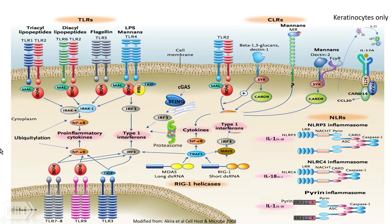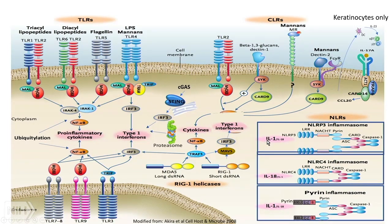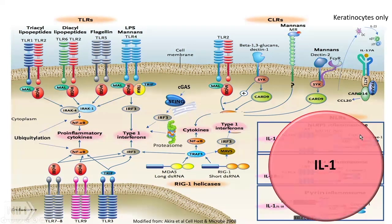Nowadays there are more than 50 auto-inflammatory genes associated with auto-inflammatory diseases. They can be caused by defects in molecules involved in the innate immune response. For example, gain-of-function mutations in the inflammasomes — the NALP3, the pyrin inflammasome, the NLC4 inflammasome — cause an auto-inflammatory disease, and these are IL-1-mediated diseases. But the NLC4 also has a component of IL-18.